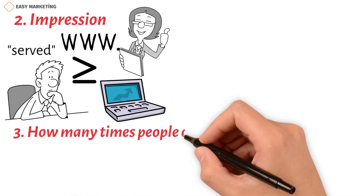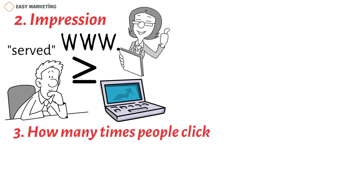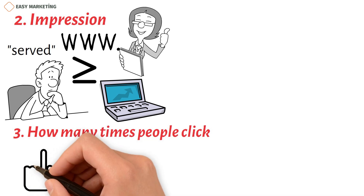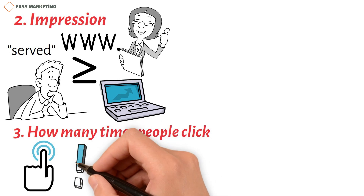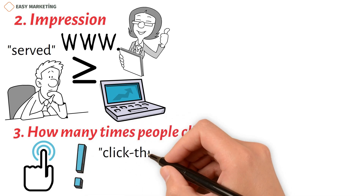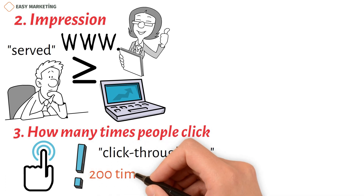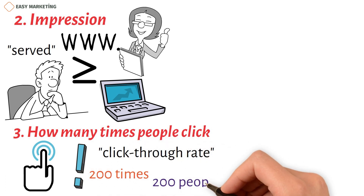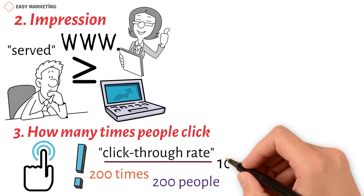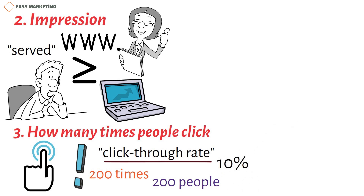Third, click-through rate — the number of people who have clicked on your ad is an important sign of how engaged they are. In math, it is the number of impressions divided by the number of clicks. For example, if your ad is seen 2,000 times and 200 people click on it, your click-through rate is 10%. If your CTRs are low, it means you need to change how you manage your display ads or look at your targeting algorithms.